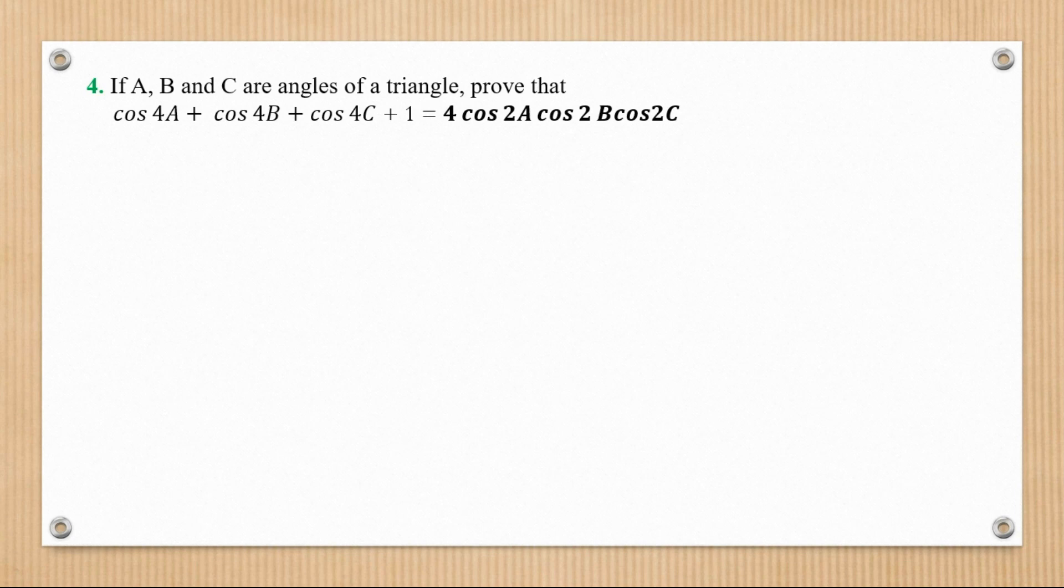If A, B, and C are angles of a triangle, prove that cos 4A plus cos 4B plus cos 4C plus 1 equals 4 cos 2A cos 2B cos 2C. Let's prove it from the left-hand side.